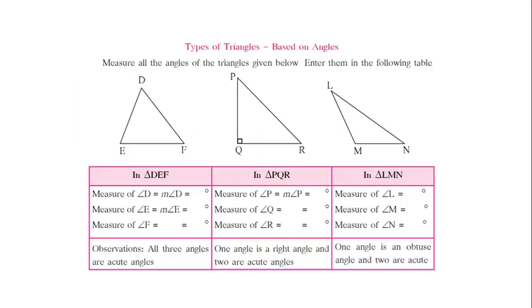And under types of triangles based on angles, we have studied three different types: an acute angle triangle, a right angle triangle, and an obtuse angled triangle.